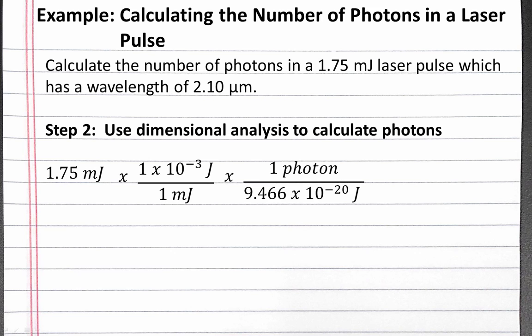And then we can convert from joules to photons using the value we calculated in step 1. One photon is 9.466 times 10 to the negative 20th joules. And completing this calculation, we should get 1.85 times 10 to the 16th photons.